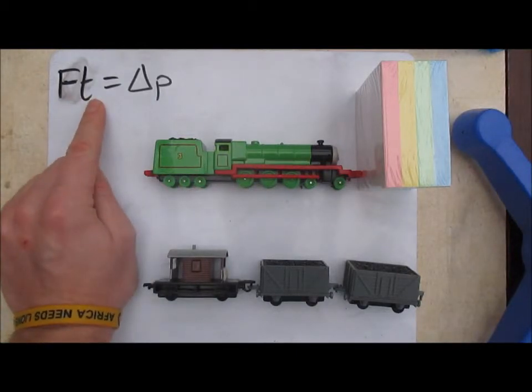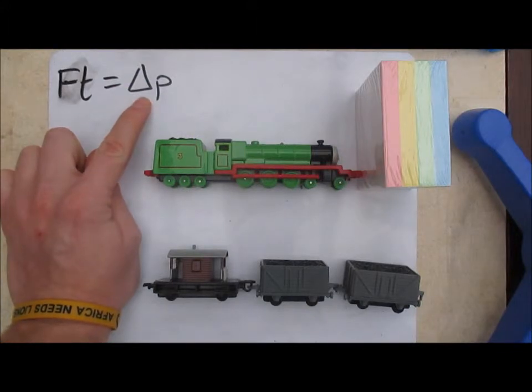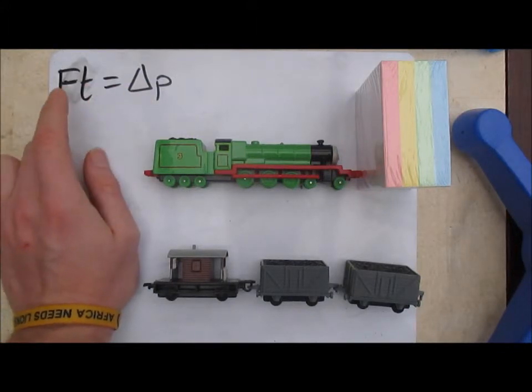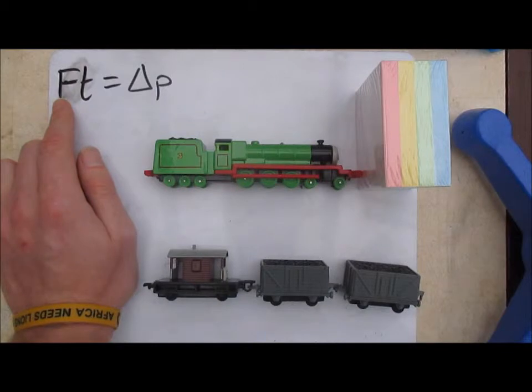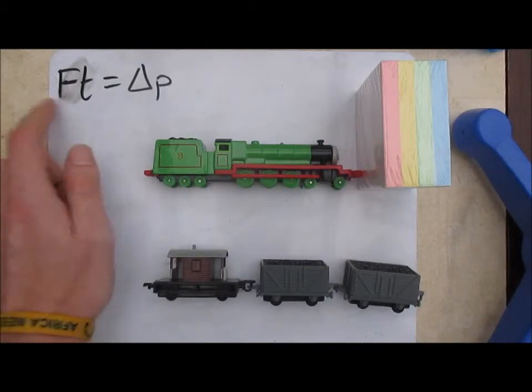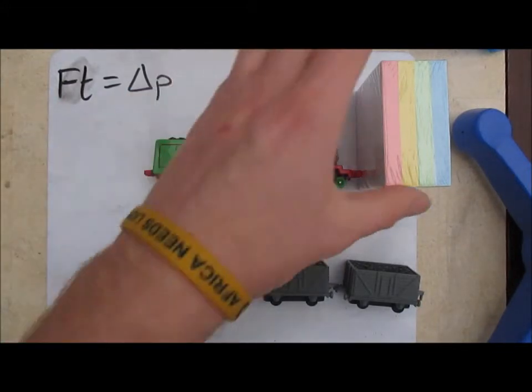So as Henry comes in and hits the wall, there's not much absorption of energy going on here. It's going to bring him to rest very suddenly. Very suddenly means a very small time, so for that large change of momentum, the large impulse we need, if we've got a very small time we're going to need an extraordinarily large force. That's going to mean a huge impact, lots of damage, and probably a lot of crying young children when they realize what's happened to Henry.